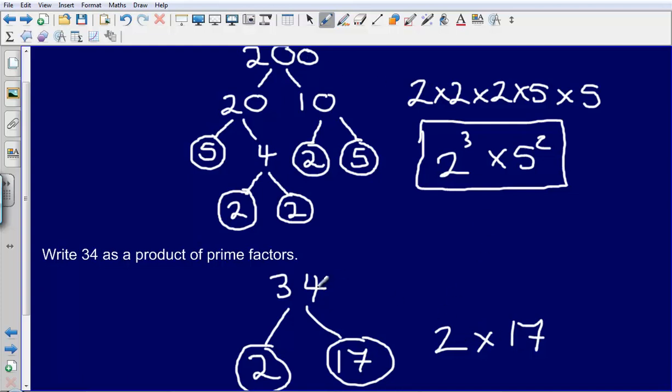Here, 2 times 17 gives me 34. That's the number I started with. So 34 written as a product of prime factors is 2 times by 17.